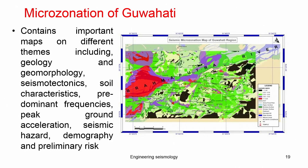Such integrations are done specific to the parameters responsible in each region. This work has been revised several times, and the seismic microzonation maps of Guwahati have also been released by the Ministry of Earth Sciences. You can find the maps and related plots in a book volume of the report.